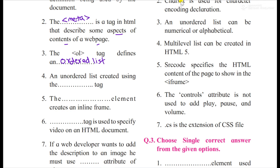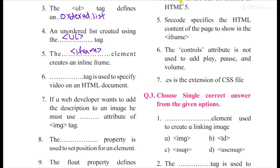Unordered list is for UL tag. Then the dash element creates an inline frame. That means iframe. The iframe element creates an inline frame. Then the dash tag is used to specify video on an HTML element. Simple video tag.